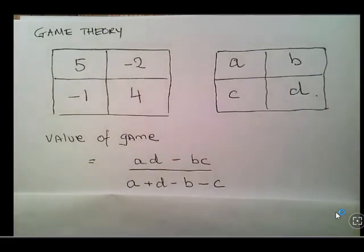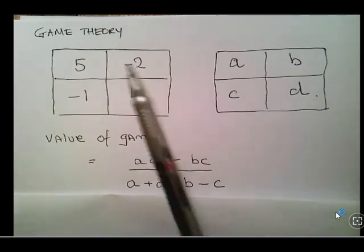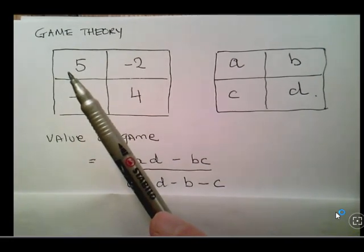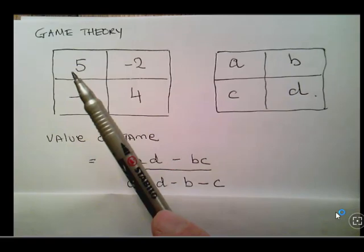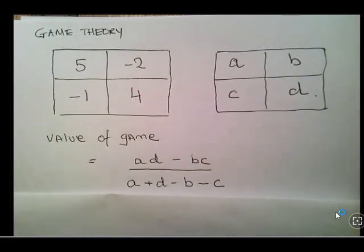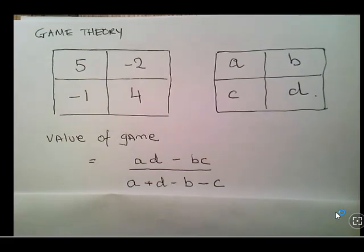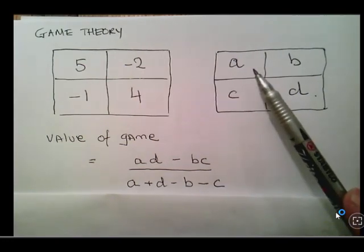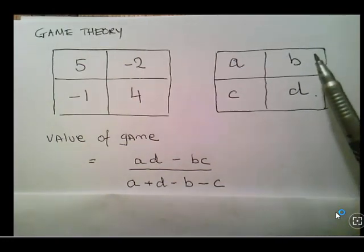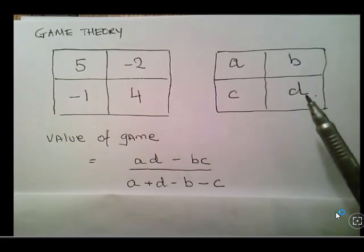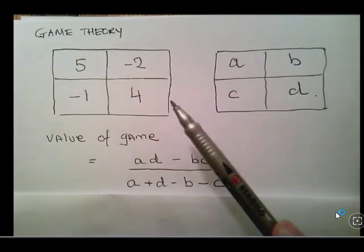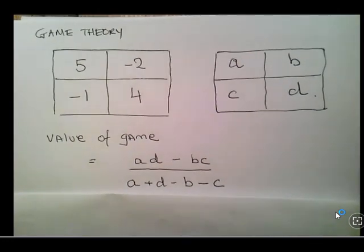In this presentation we are going to look at Game Theory, and what I'm going to do is look at this 2x2 matrix game. We have the Row Player and the Column Player and this is a payoff matrix. The top left is A, top right is B, bottom left is C, and bottom right is D. So for example 4 is D, A is 5, and so on.